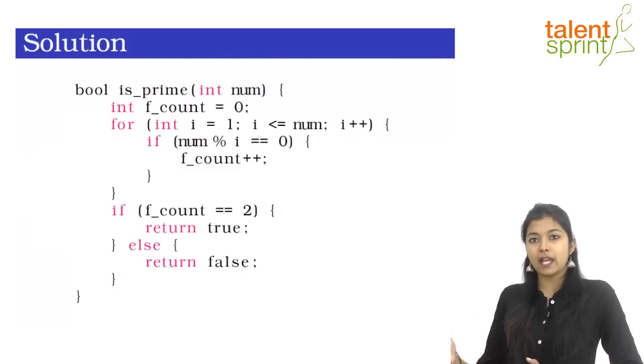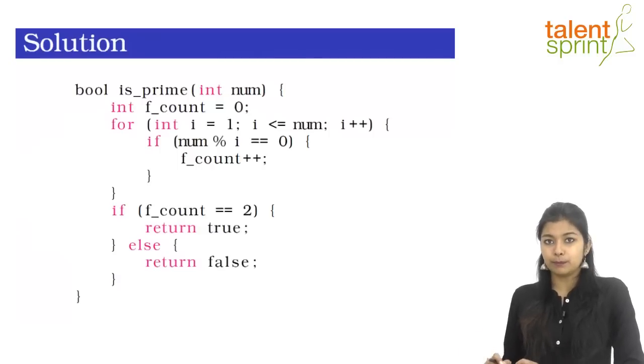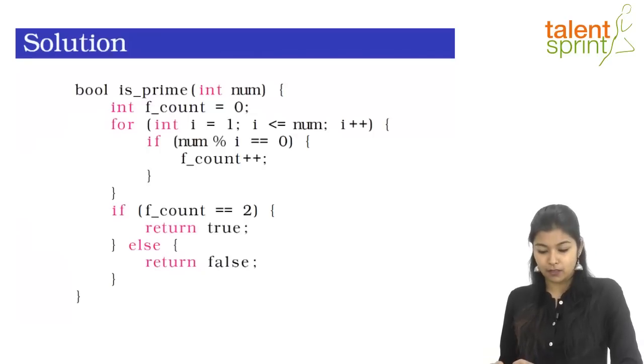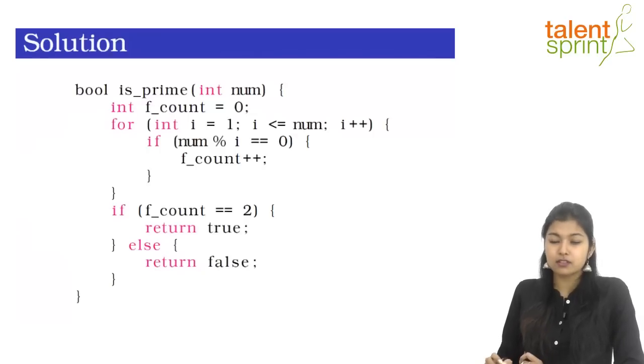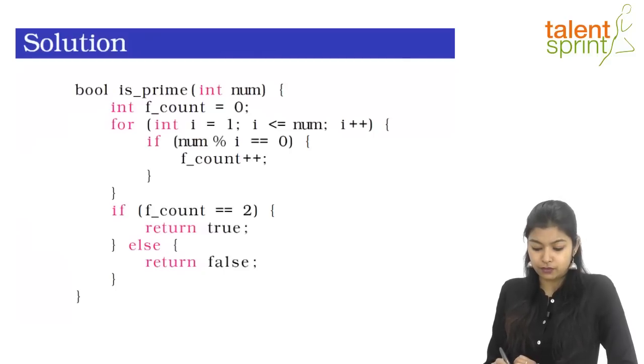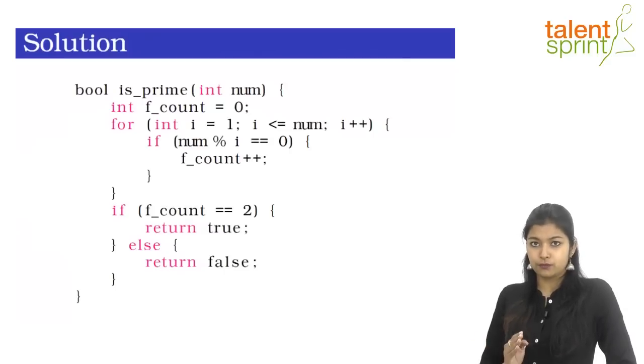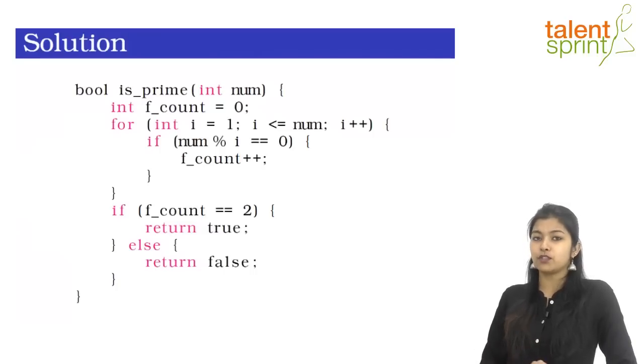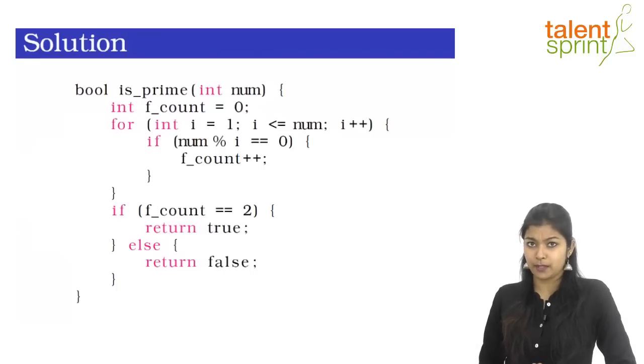Once the loop completes and we have our final f_count, we use a simple if-else construct: if f_count equals 2, we return true — the number is prime; otherwise we return false — the number is not prime. So we saw how to write a basic program to find if a number is prime. This will get you the results, but we are all about finding an improved way to make your coding style better and look more professional.